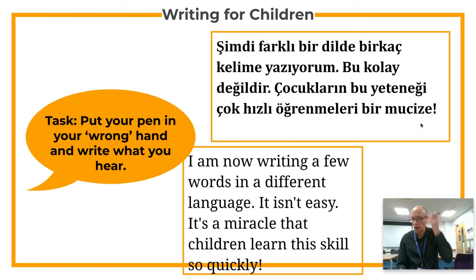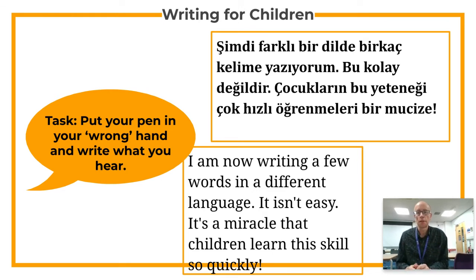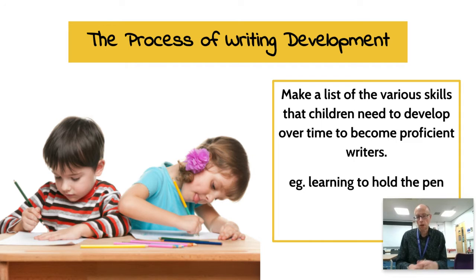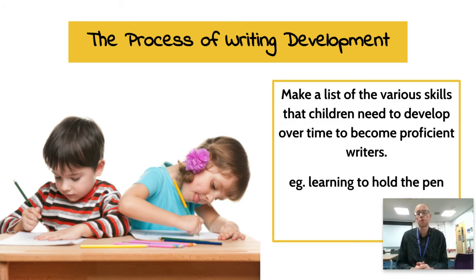So if you imagine any child learning to write, they have to make sense not only of individual phonemes but individual words, and then construct them and put them together into syntactical structures which are standard for their language. That gives you some of the difficulties that everyday children come across in learning to write. What I want you to do is make a list of the various skills that children need to develop over time to become proficient writers, starting from the very basics of learning to hold the pen and going up to constructing essays. Think about the different language levels — lexis, grammar, discourse, etc.